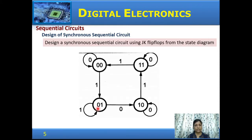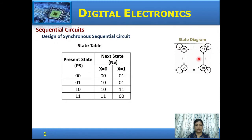Let us take an example: design a synchronous sequential circuit using JK flip-flops from the given state diagram. Here the state diagram is directly given with binary values already assigned, and no outputs are indicated — the flip-flops change state on each clock pulse. From the state diagram, draw the state table showing present state and next state for inputs X=0 and X=1. The four present states are 00, 01, 10, and 11. For example, when the present state is 00 and X=0, the next state is 00; when X=1, the next state is 01.